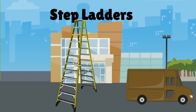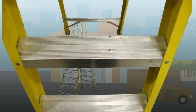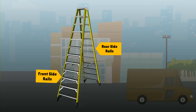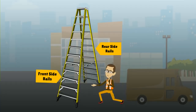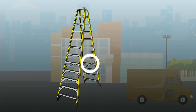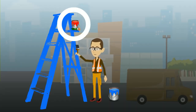Step Ladders. A step ladder is constructed with wide, flat steps and two pairs of rails connected by a hinge at the top that opens at the bottom, so it can be freestanding without being attached to or supported by something else. Lock spreaders secure the two pairs of legs. Ladders also include a shelf which can support paint cans or other objects while working.